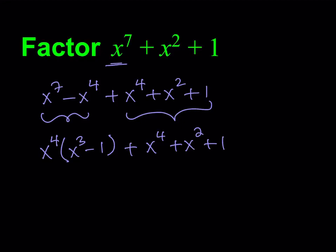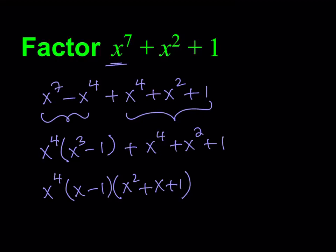If you think about it, x cubed minus 1 can be factored as (x minus 1)(x squared plus x plus 1). This is the difference of two cubes — you must know the formula. If not, that's the formula and you just factor it like that.